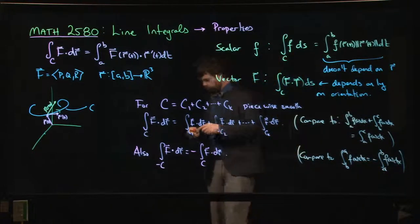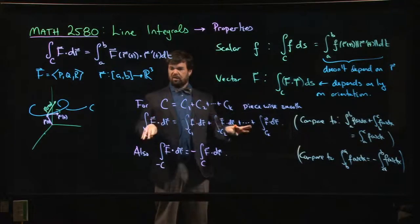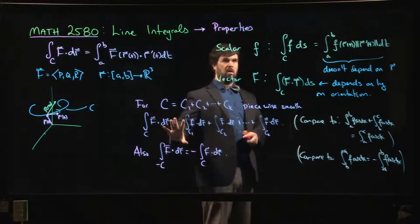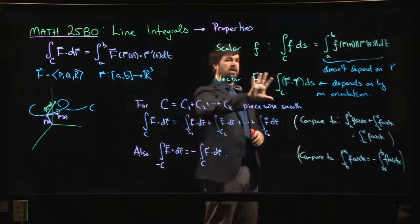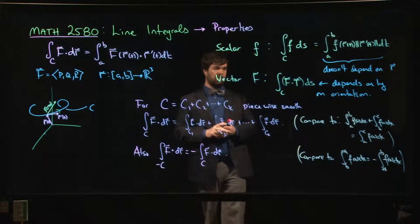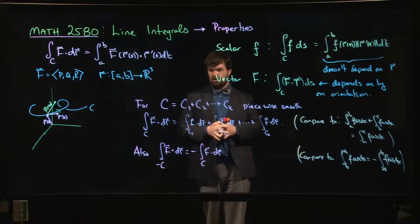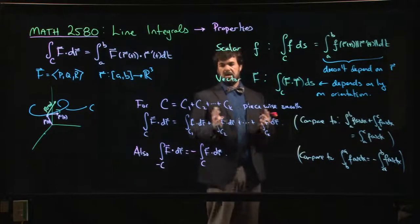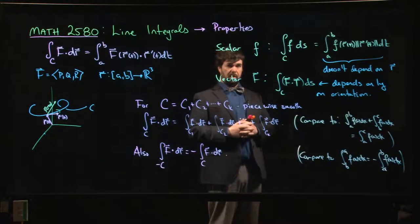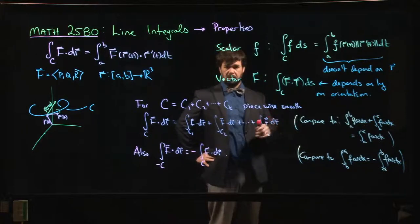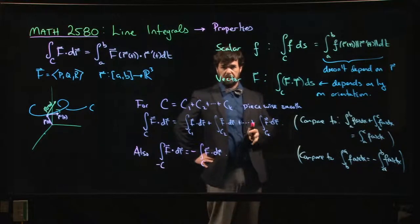In practice, you'll rarely directly invoke the parameterization-independence property, but it's useful to know: if you're given a curve and not told which parameterization to use, you don't have to worry about choosing the wrong one. As long as your parameterization produces the curve you want it to produce, you'll get the right answer regardless of how you choose that parameterization.